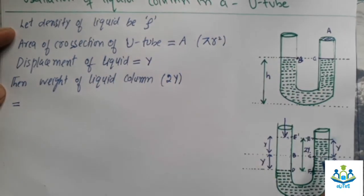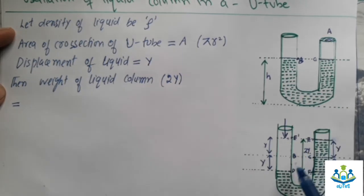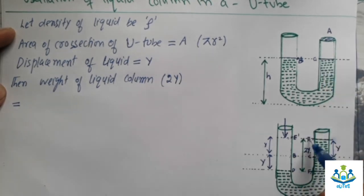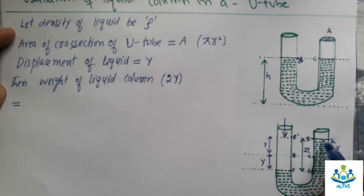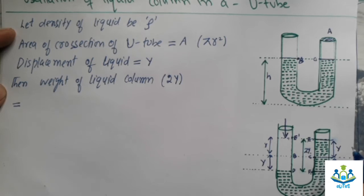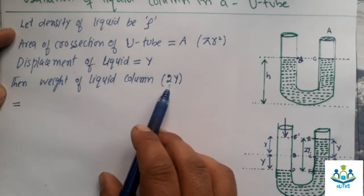The displacement of the liquid: this was initially the equilibrium position and now it goes from B to C through Y. This is the displacement of the liquid. Now when it moves from C to E height, then D and F are at the same height. Then the liquid column having height 2Y, this weight of the liquid column will make it oscillate.